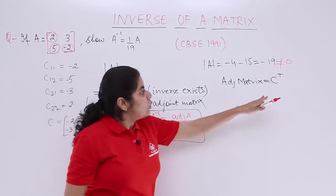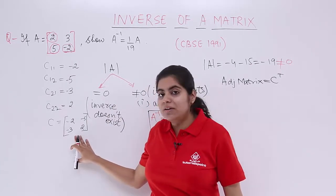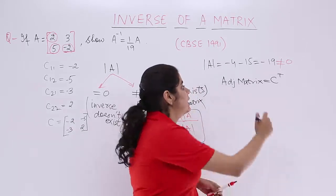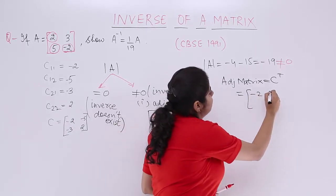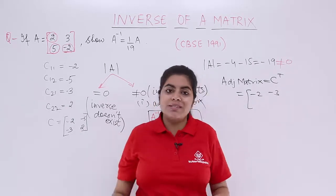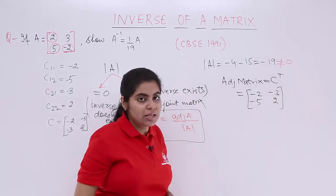Co-factor matrix transpose means transpose of this matrix. This matrix has minus 2, minus 3 as the first column. Let's make it the first row. This matrix has minus 5, 2 as the second column. Let's make it the second row. We got the adjoint matrix.